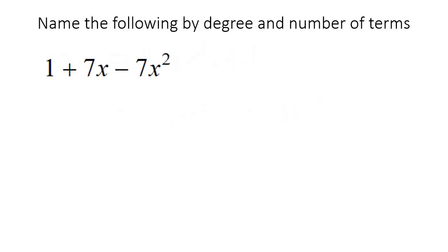Here's our last example. So here we have the highest exponent as a 2, so that's a second degree. And then it's got three terms, so that is a trinomial.